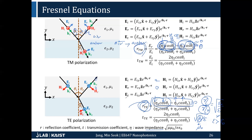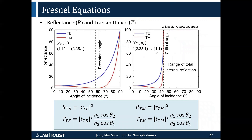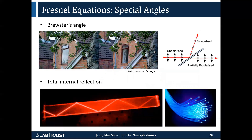More importantly, in order to have a Brewster's angle for the TE wave, you would need a strong magnetic response — but this is not the case for almost all materials in nature. If you have any questions, you can type in the chat.